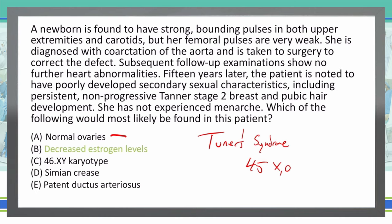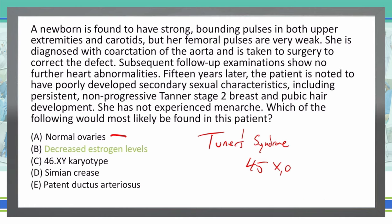Of note, on similar questions: if you had a patient who was developing normally up until puberty and then noticed some weird masses in the abdomen or similar presentations with a 46XY karyotype, this is known as androgen insensitivity syndrome.